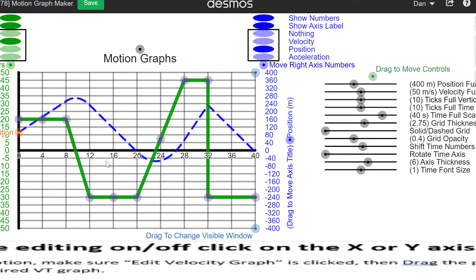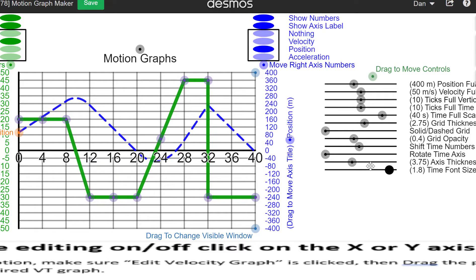Now sometimes for the time axis, the numbers can be hard to read. So you can shift those numbers up or down. You can rotate them sideways. You can change the axis thickness. And you can change the font size.